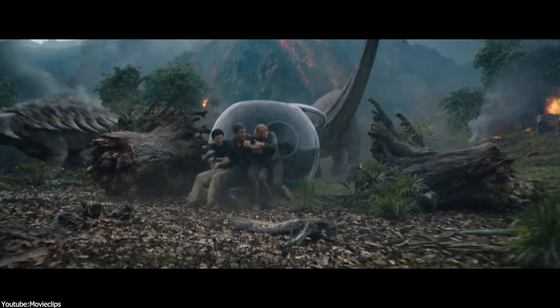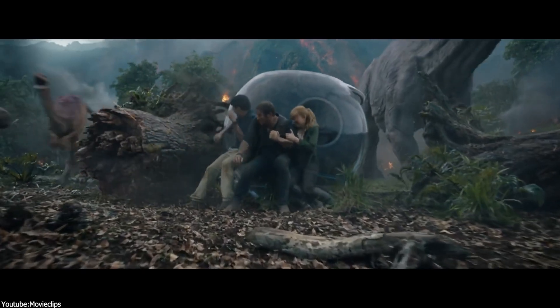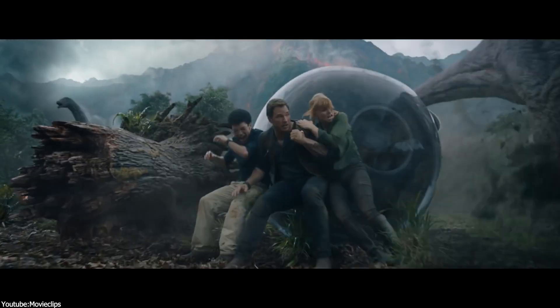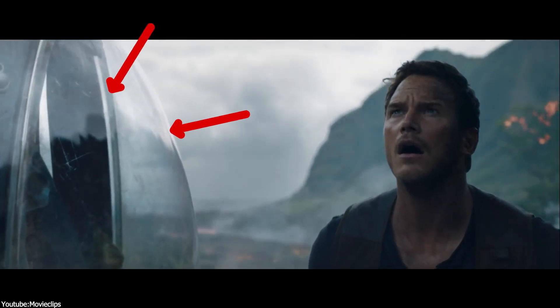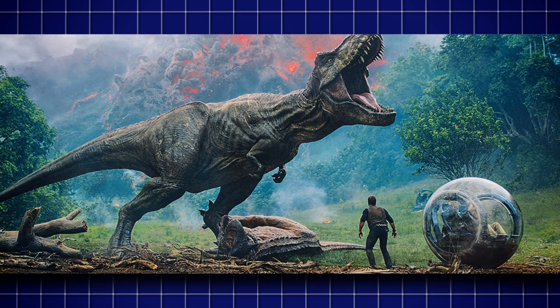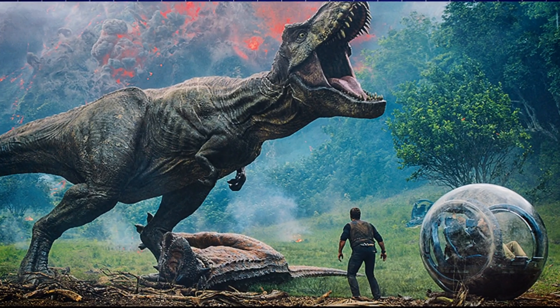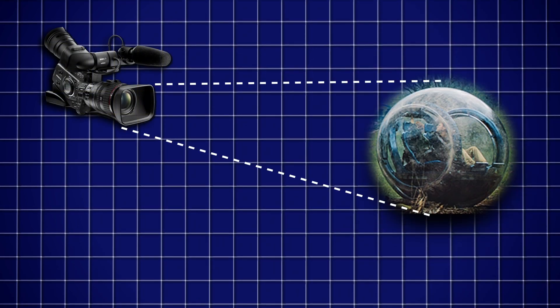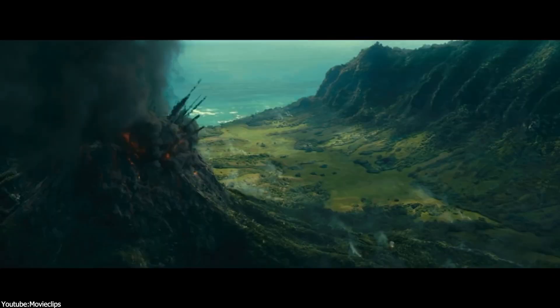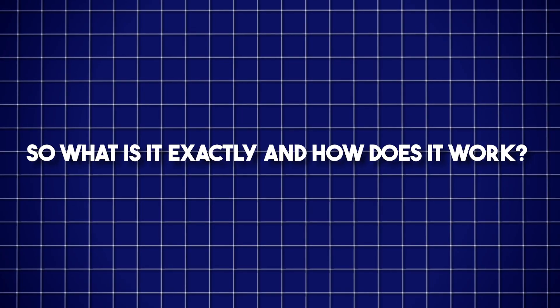For example, while the gyrosphere is traveling the land in the Jurassic Park movie, we can witness the reflections of the environment on the glass of the vehicle, which makes viewers wonder if it was shot on camera or if it was just a CG element. Needless to say, that was done with the help of HDRIs. So what is it exactly and how does it work?